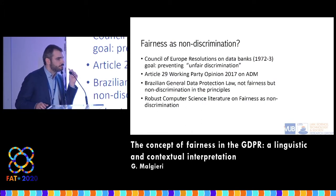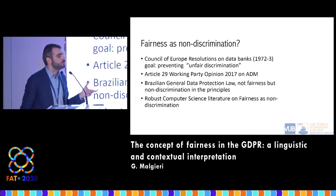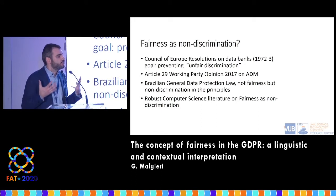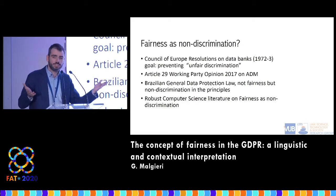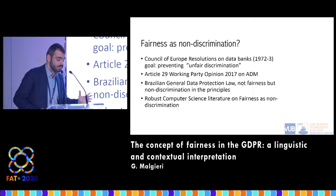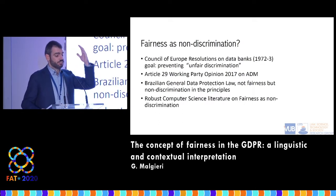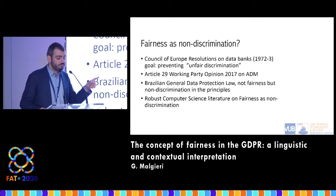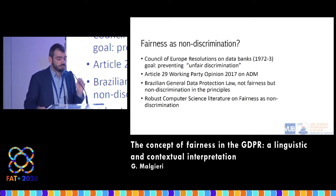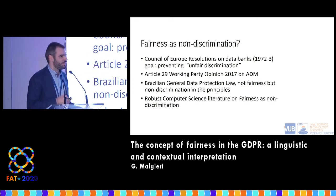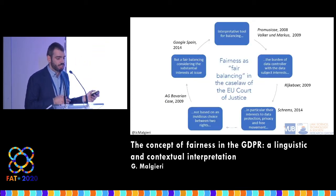The first thing I want to emphasize is the link between fairness and non-discrimination, because this is mostly a computer science audience, and there is a robust literature assuming that fairness means non-discrimination, because this is usually what we deal with in computer science. It's not so distant from the very first reference to fairness, which was the Council of Europe Resolution of 1972 — one of the goals was preventing unfair discrimination. Also, Article 29 Working Party, which is the Council of All Data Protection Authorities, in 2017 connected the notion of fairness to non-discrimination. The Brazilian version of the GDPR also doesn't mention fairness as a principle, but non-discrimination.